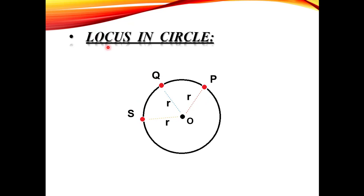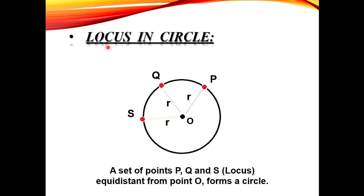इस Set को असल में Locus कहा जाता है। A Set of Points P, Q & S — यानि इन 3 Points का Set — जिसे आप Locus कहते हो — Equidistant from Point O, forms the Circle। एक ज़रूरी बात: अगर एक Fixed Point से Equal Distance पर Points लो, तो उनका Set हमेशा Circle बनाएगा, लेकिन Locus सिर्फ Circle पर Apply नहीं होता — एक और Condition भी है, जो अगले Slide में दिखाएंगे।